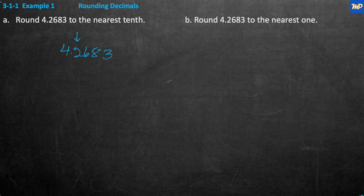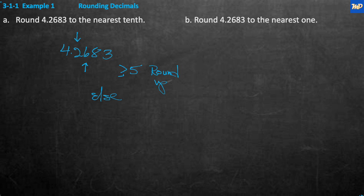The place we're rounding is the tenths. You look to the first place to the right — the hundredths place. If it is greater than or equal to five, you round up; otherwise you round down. Right now it's 6, which is greater than or equal to 5, so we round up. The new number is going to be 4.3.